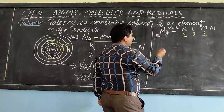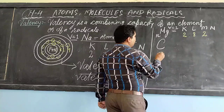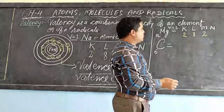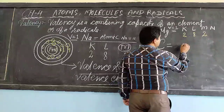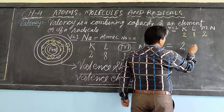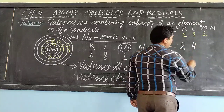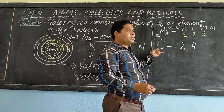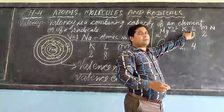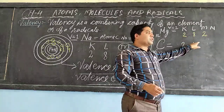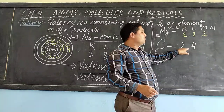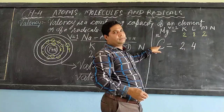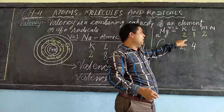So the valency of magnesium will be 2. Let us see another example — Carbon. Carbon's atomic number is 6. We distribute the electrons according to the shells: K shell 2 and L shell 4. So the valence shell will be the L shell. In the case of carbon, the valence shell is L and the valence electron is 4. So 4 is the valency of carbon.